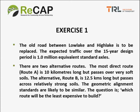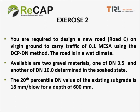The first exercise: the old road between Low Lake and High Lake is to be replaced. The expected traffic over the 15-year design period is 1 million equivalent standard axles. There are two alternative routes. Route A is 10 kilometres long but passes over very soft soils. The alternative, Route B, is 12.5 kilometres long but passes across relatively strong soils. The geometric alignment standards are likely to be similar because the terrain is very similar.